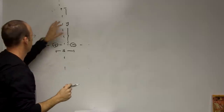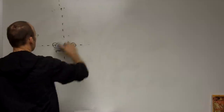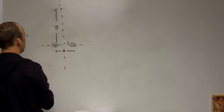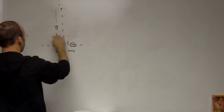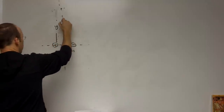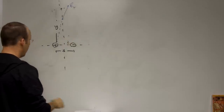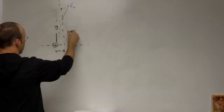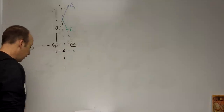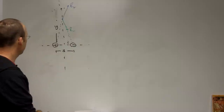I want to find the electric field at a point a distance y away from the dipole center along the y-axis. There are two electric fields to add together. The electric field due to the positive charge, E+, points away from it at some angle, and the electric field due to the negative charge, E-, points toward it.